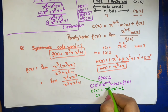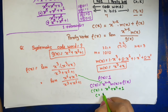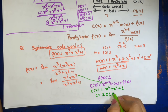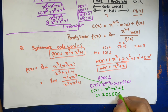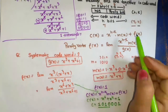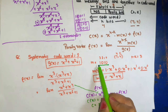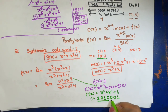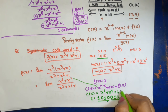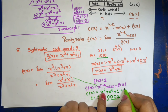Now we convert C(x) = x⁶ + x⁴ + 1 to binary. x⁶ is present → 1. x⁵ is absent → 0. x⁴ is present → 1. x³ is absent → 0. x² is absent → 0. x¹ is absent → 0. x⁰ is present → 1. So the code word is 1 0 1 0 0 0 1.